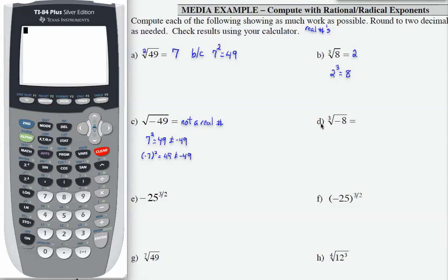Part D, we have a cube root of negative 8. Now the difference here, remember when I have a square root there's a 2, so something squared is not ever going to equal a negative. However, something cubed could be negative, and in this case that would be negative 2. Negative 2 to the 3rd equals negative 8, so the cube root of negative 8 is negative 2.